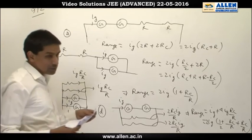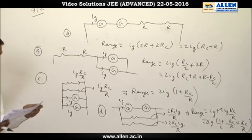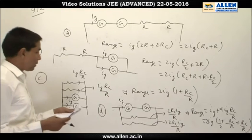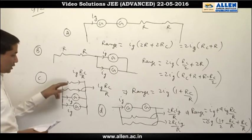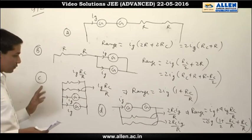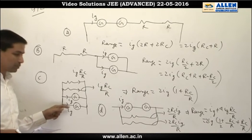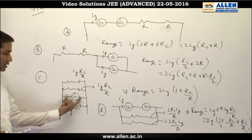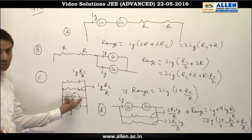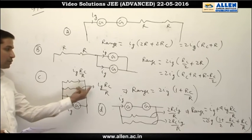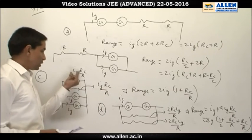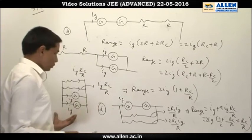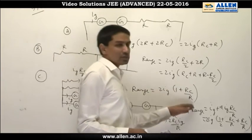For maximum current range, option C says it is obtained when all components are connected in parallel — R, R, R_C, and R_C all in parallel. In the galvanometer branch, the current is I_G. Since the potential difference across the galvanometer branch is I_G·R_C, the current in each resistor branch becomes I_G·R_C/R. So the total current becomes 2I_G(1 + R_C/R).